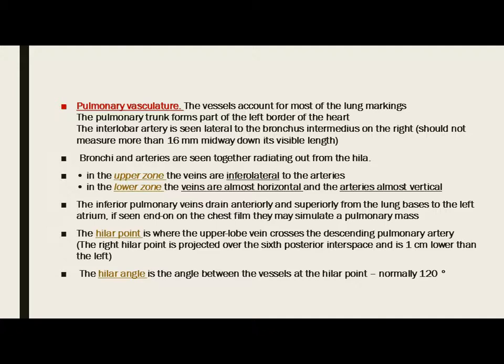In the upper zone, the veins are inferior lateral to the arteries, while in the lower zones the veins are almost horizontal and the arteries are almost vertical. The inferior pulmonary veins drain anteriorly and superiorly from the lung basis to the left atrium. On the chest film they may simulate a pulmonary mass. The higher point is where the upper lobe vein crosses the descending pulmonary aorta and is projected over the posterior interspace, one centimeter lower on the right side.